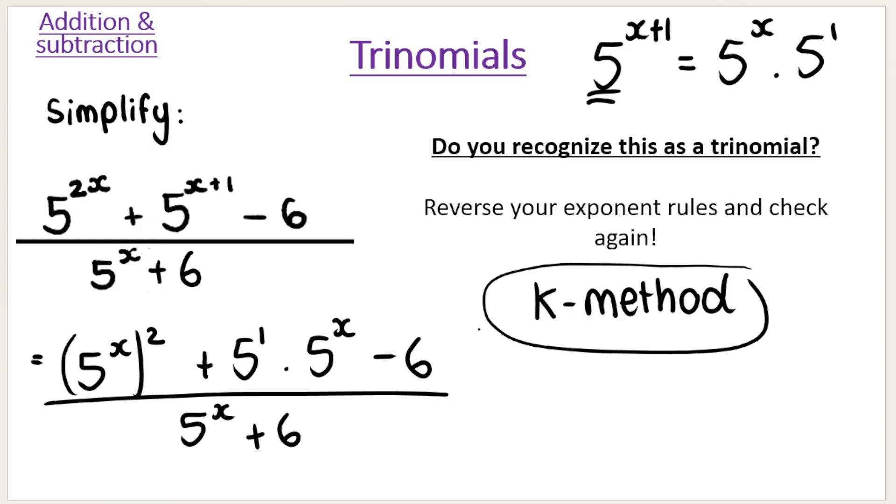So a nice rule that you can learn if you see something like this is first step, break up or reverse the exponent rules. That would be step 1. Break up or reverse the exponent rules. So for example, instead of saying 5 to the power of X plus 1, you're going to say 5 to the power of X and 5 to the power of 1.